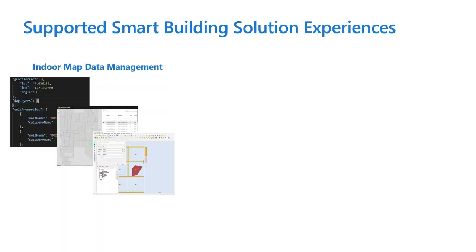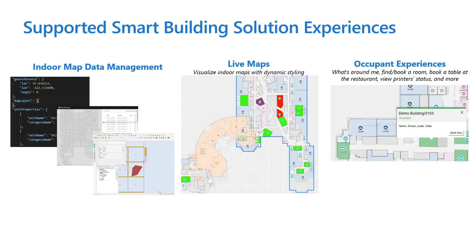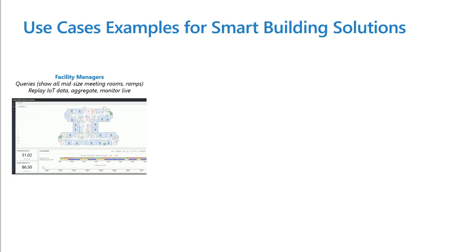These are some of the supported smart building solution experiences. You can have indoor map data management, live map visualization, and occupant experience — to find a room, get who is assigned to each office, book a table in a restaurant, book a seat in an airplane, or book a seat in a movie theater. This is also great for facility managers to query the capability of meeting rooms, relying on IoT data to get sensor and device data for each room.